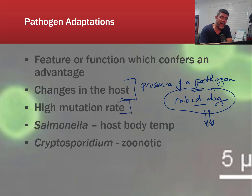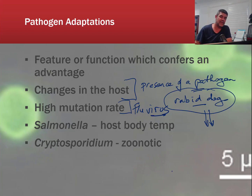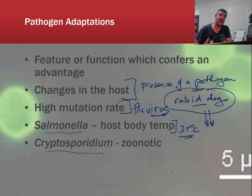Certain types of pathogens have very high mutation rates, and one of the best examples is the flu virus. We know that you can get influenza one year, get the vaccine for it, and then it comes back again the next year with a slightly different strain to the one previously. Salmonella is also one to look at - it seems to have been able to adapt or change through mutation to survive better at its host's body temperature. Around 37 degrees is the optimum, enabling it to carry out reproduction at a high rate, which is one of those important multiplication steps for the survival and transmission of the pathogen.